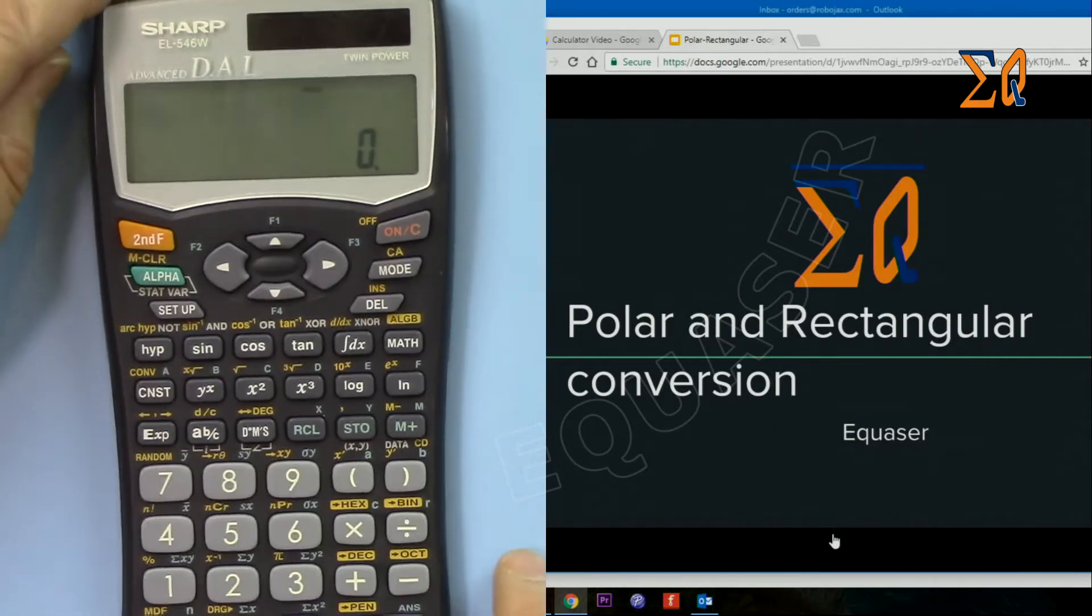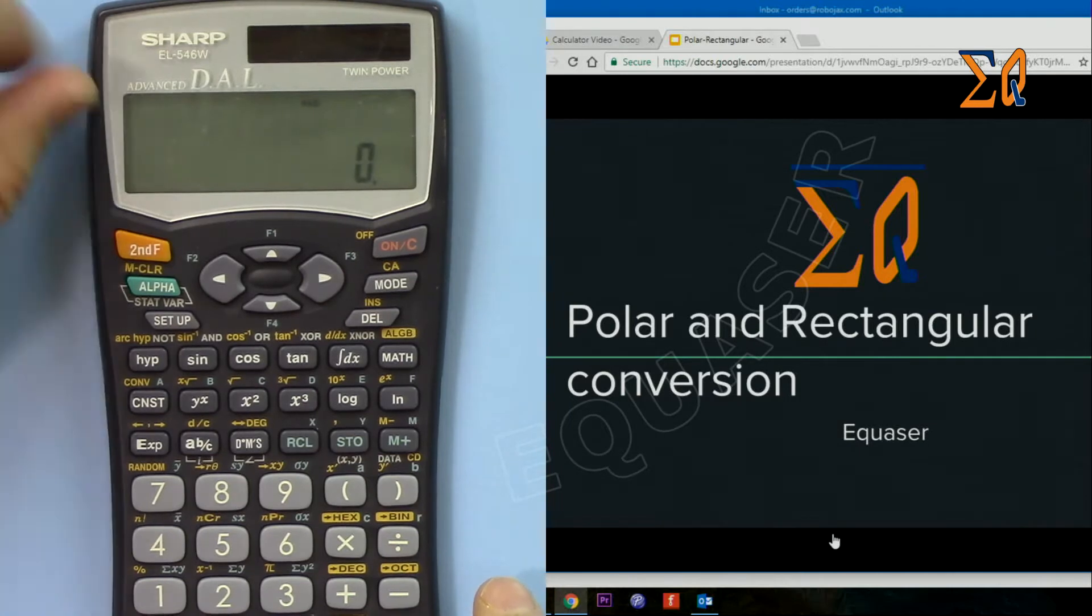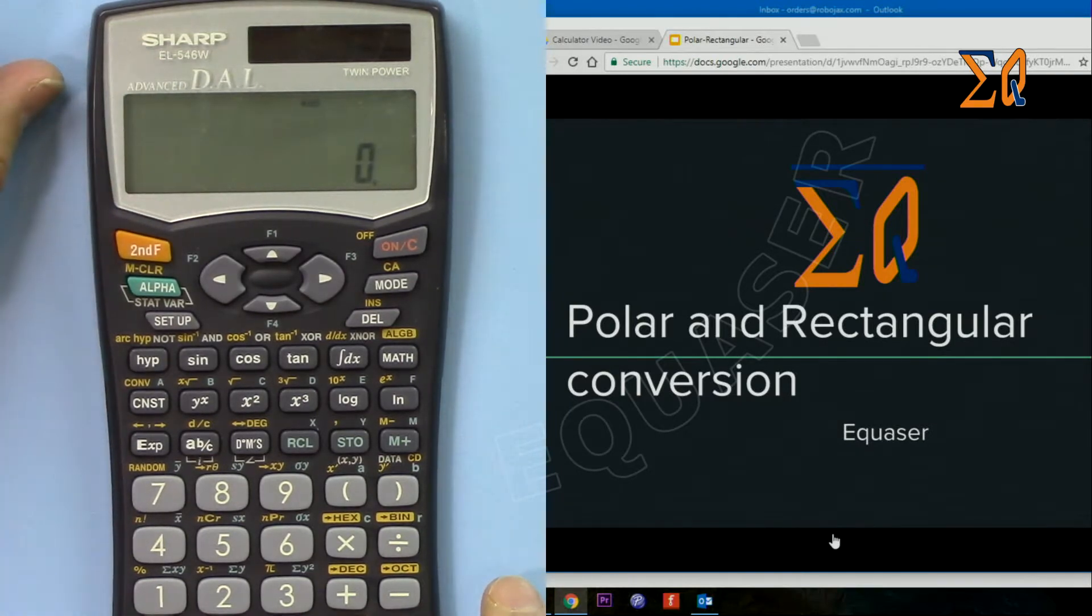Hi, welcome to Equasor. In this video I'm going to show you how we can use this Sharp EL546W calculator to do polar and rectangular conversion.